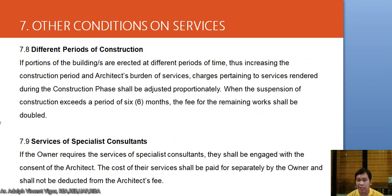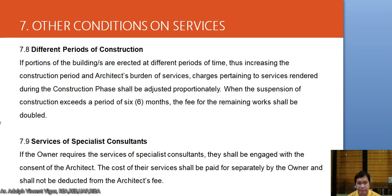If portions of the building are erected at different periods of time, increasing the construction period and the architect's burden of services, charges pertaining to services rendered during the construction phase shall be adjusted proportionately. When the suspension of construction exceeds a period of six months, the fee for the remaining works shall be doubled. If the owner requires the services of specialist consultants, they shall be engaged with the consent of the architect; the cost of their services shall be paid for separately by the owner and shall not be deducted from the architect's fee.